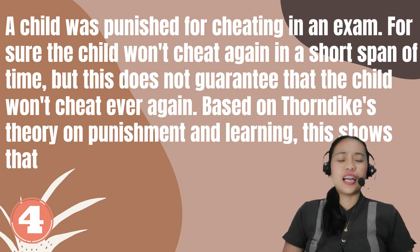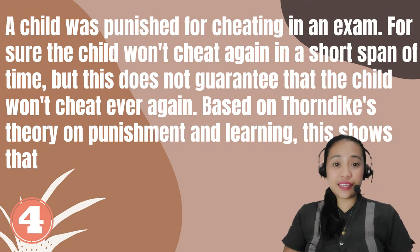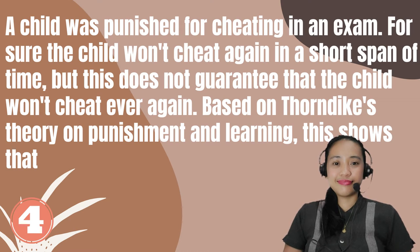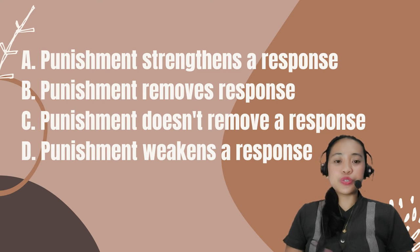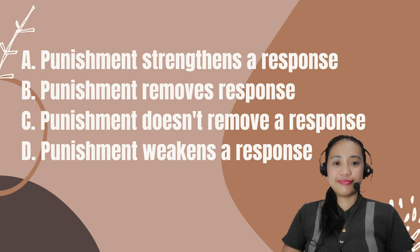Number 4. A child was punished for cheating in an exam. For sure, the child won't cheat again in a short span of time, but this does not guarantee that the child won't cheat ever again. Based on Thorndike's theory of punishment and learning, this shows that... A. Punishment strengthens a response. B. Punishment removes a response. C. Punishment doesn't remove a response. D. Punishment weakens a response.